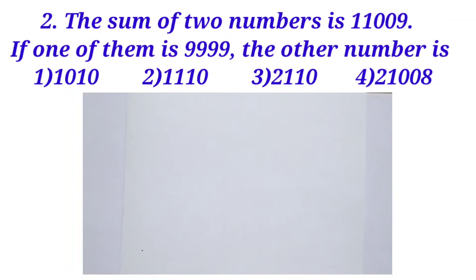Next question. The sum of two numbers is 11,009. If one of them is 9,999, find the other number.